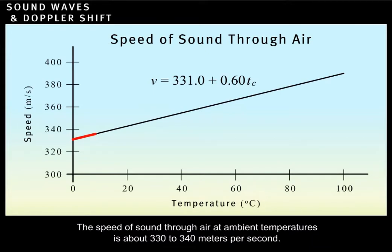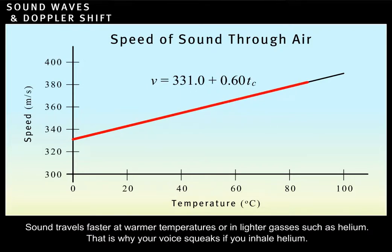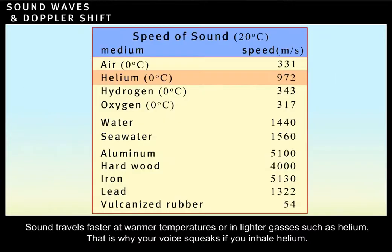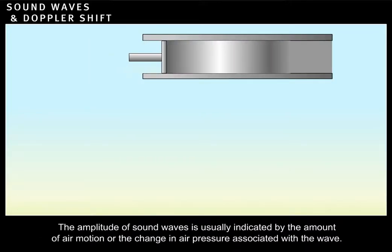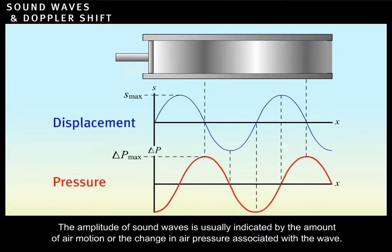The speed of sound through air at ambient temperatures is about 330 to 340 meters per second. Sound travels faster at warmer temperatures or in lighter gases such as helium. That is why your voice squeaks if you inhale helium. The amplitude of sound waves is usually indicated by the amount of air motion or the change in air pressure associated with the wave.